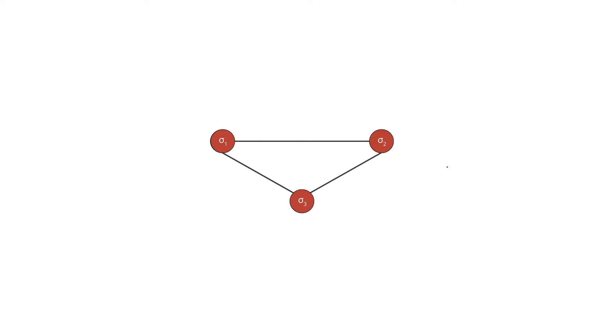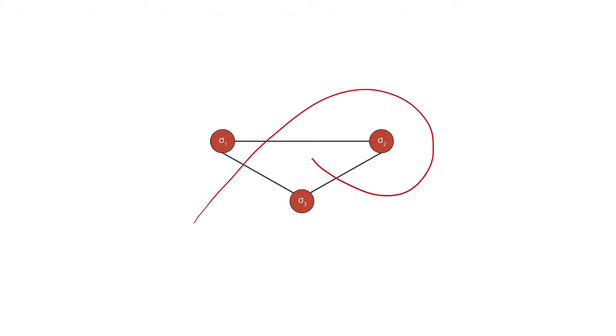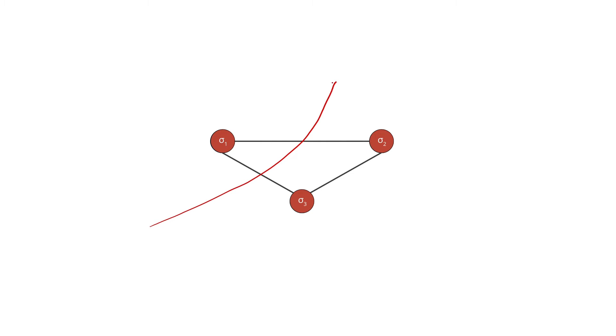How about we try another example? Here we have three Ising cells. Let me try to draw a partition line that cuts through the most number of edges. You can't cut through the same edge twice, and the partitioning line must start from outside the graph and end outside the graph. In this case, I've cut through two of the edges and I don't see any way that I can cut through the third edge. This is actually the right answer.